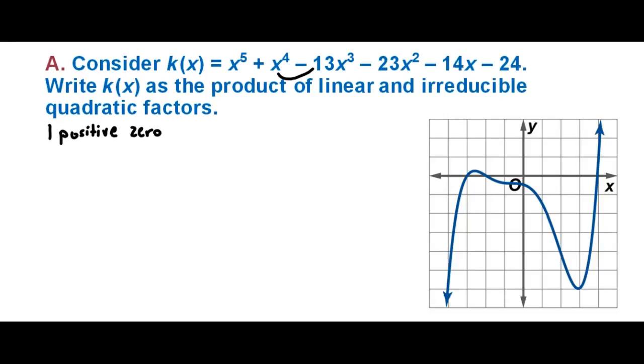Taking a look at the graph of this function, we can be almost certain that positive zero occurs at x equals four here on the graph.